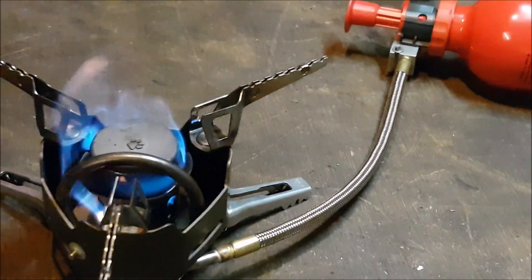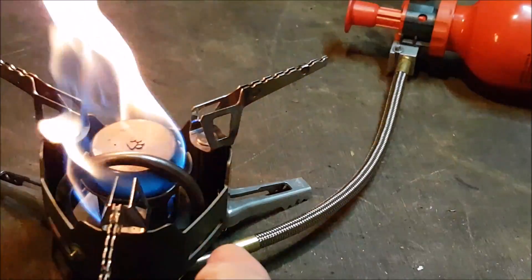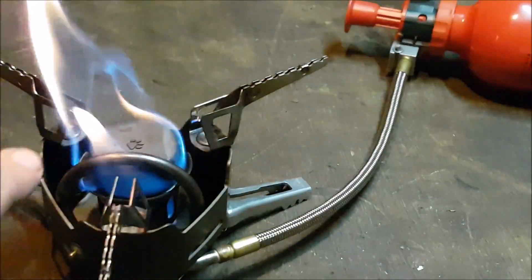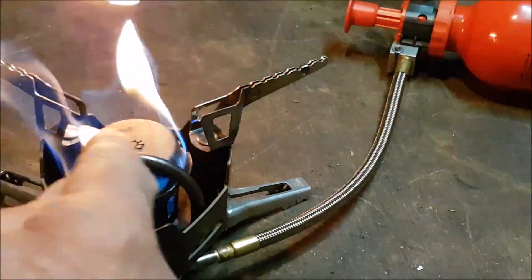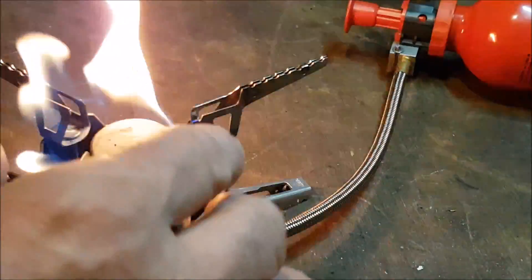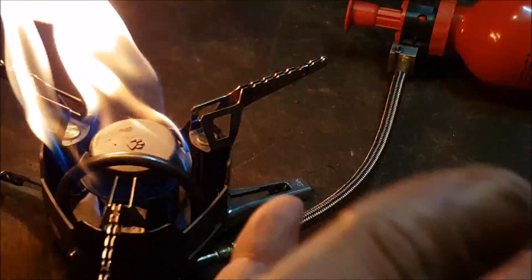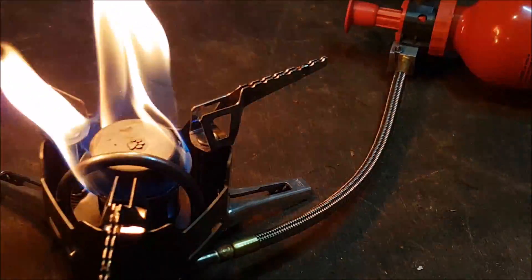You ignite that first. And then what that does, that actually heats up the chamber. If you can see that little loop going over there, that's like a gasifying chamber. There's liquid gas in here at the moment, when it gets to a certain temperature, then that liquid gas turns to vapor, and then it should ignite. So you just let that run for a while.